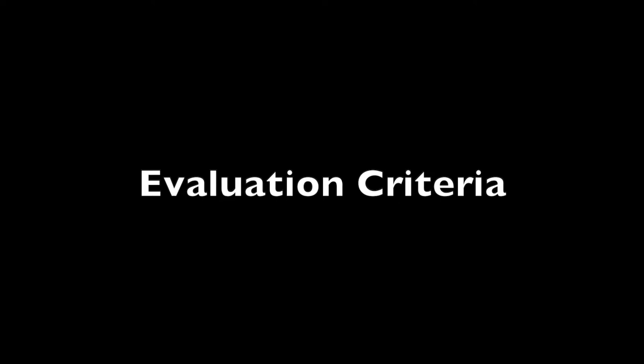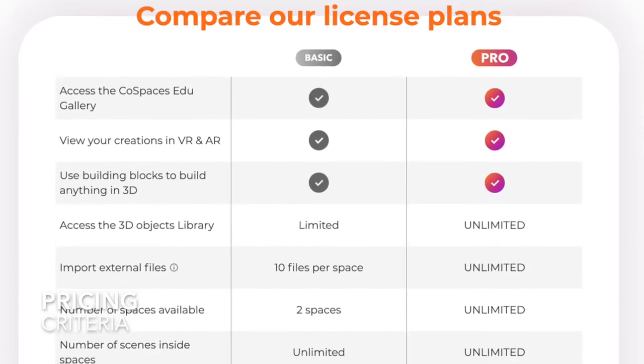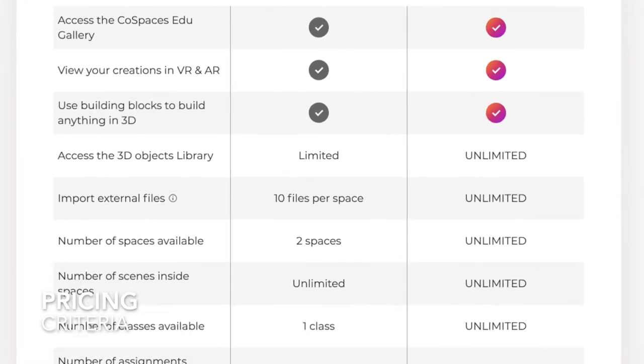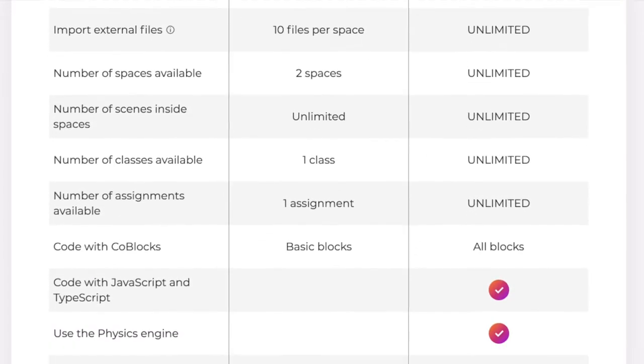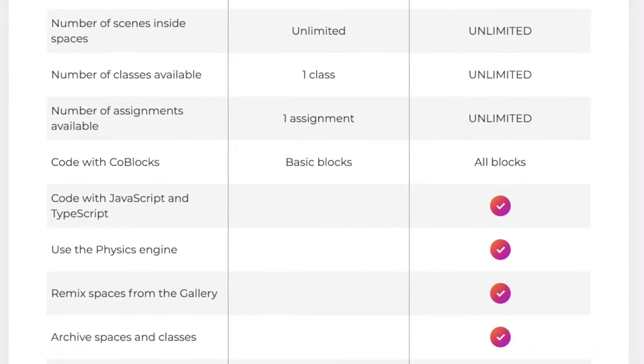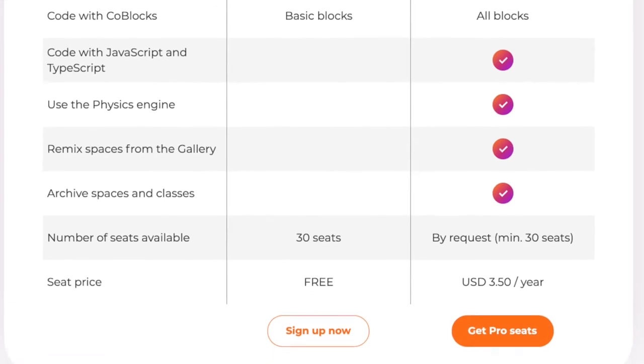I'll now review the evaluation criteria for this web-based application. Regarding cost, there are two tiers: a free version and a pro version. The pro version costs $105 for the license for one year.